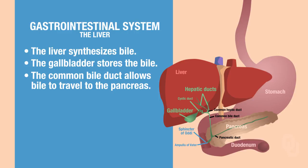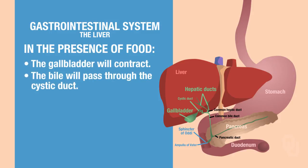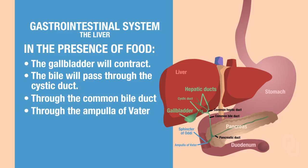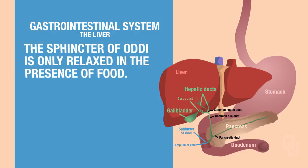In the presence of food, the gallbladder will contract. You squeeze the gallbladder, the bile passes through the cystic duct, through the common bile duct, through the ampulla of Vater — remember that's the common passageway for both pancreatic juice and bile — through the open sphincter of Oddi, and then into the duodenum. Remember, the sphincter of Oddi is only relaxed in the presence of food.